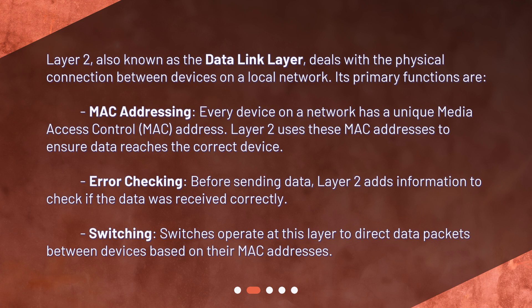Error checking: before sending data, layer 2 adds information to check if the data was received correctly. Switching: switches operate at this layer to direct data packets between devices based on their MAC addresses.